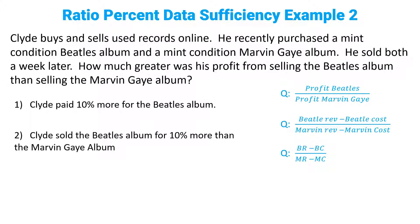We translate each statement out of English into math and see if we can get all the variables to cross off. Statement one: Clyde paid 10% more for the Beatles album. In math, that means BC equals 1.1 MC. Is that enough to cancel all variables? No way — we have no information about revenue, so it's insufficient. Statement two: Clyde sold the Beatles album for 10% more than the Marvin Gaye album. In math, BR equals 1.1 MR. Is that enough? No — statement two alone gives us no information about cost, so that's also insufficient.